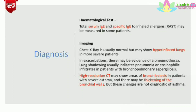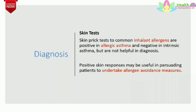Hematological tests: total serum IgE and specific IgE to inhaled allergens may be measured in some patients. Imaging: chest X-ray is usually normal but may show hyperinflated lungs in more severe patients or evidence of pneumothorax. Lung shadowing usually indicates pneumonia or eosinophilic infiltrates in patients with bronchopulmonary aspergillosis. High resolution CT scan may show areas of bronchiectasis in patients with severe asthma and thickening of bronchial walls, but these are not diagnostic. Skin prick tests to common inhalant allergens are positive in allergic asthma and negative in intrinsic asthma, useful for allergy avoidance measures rather than diagnosis.